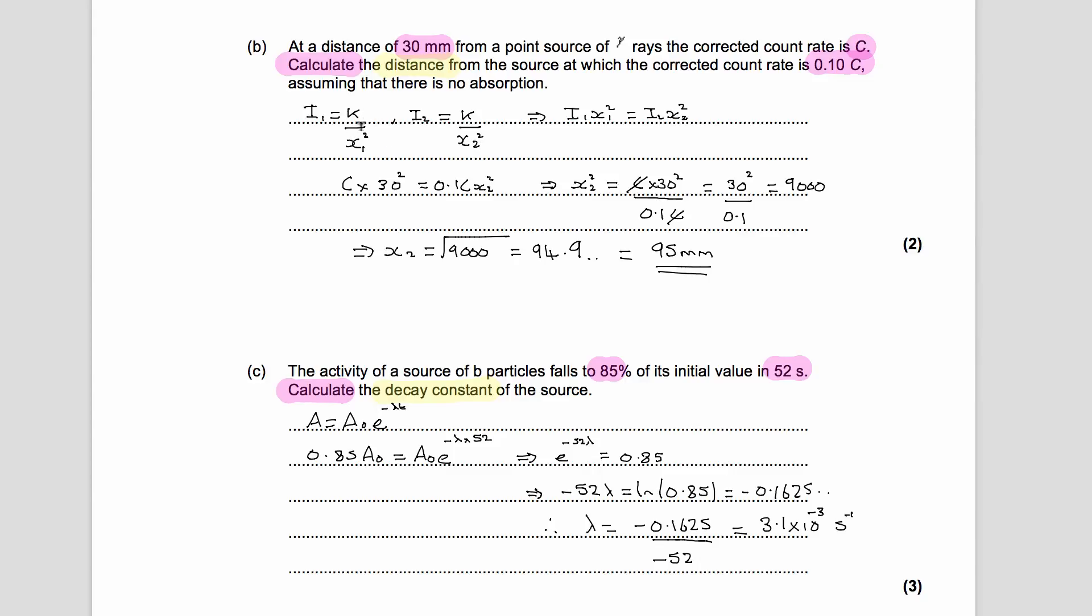We can rearrange these and we can say that K is equal to I₁ times X₁ squared, and that K is also equal to I₂ times X₂ squared. The K is obviously the same K, so that basically means that I₁ times X₁ squared is I₂ times X₂ squared. Then we just need to put our numbers and the information we've got in. The count rate at the first place is just C. We'll keep the distance in millimeters because provided the two distances are in the same units, then that's fine. So we've got 30 squared equals 0.1 C times X₂ squared.